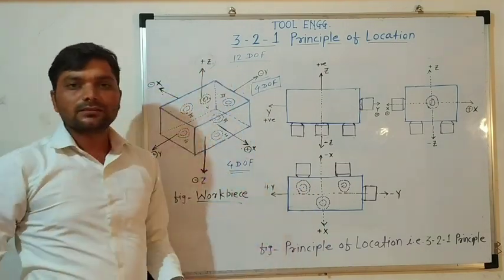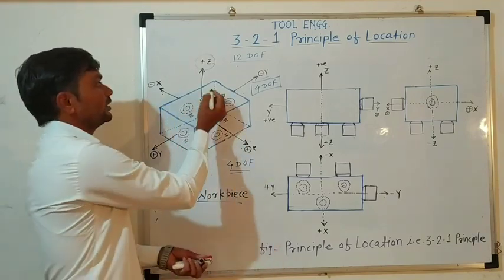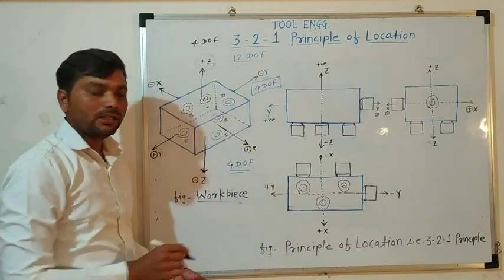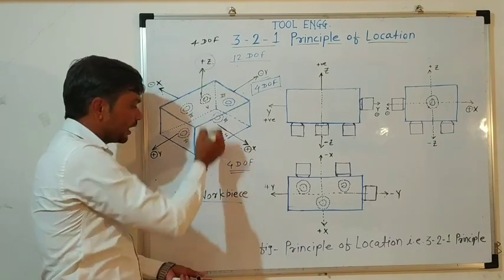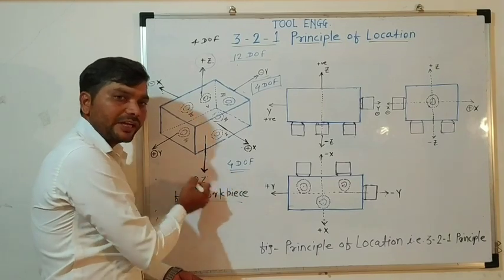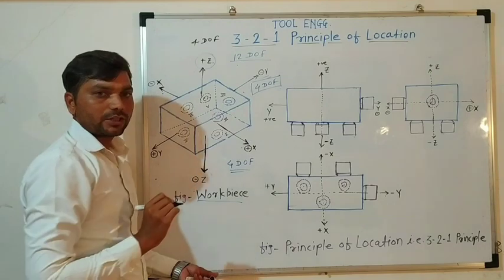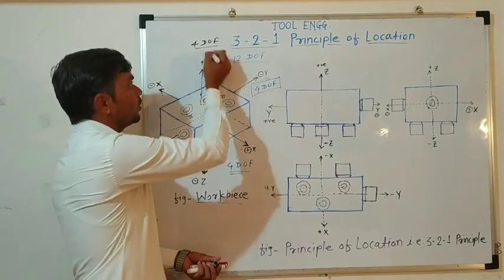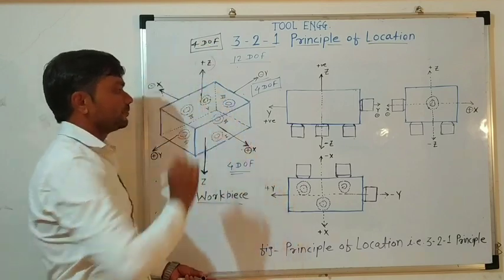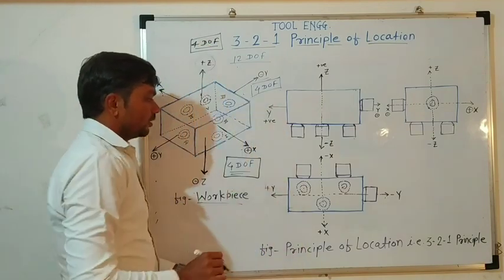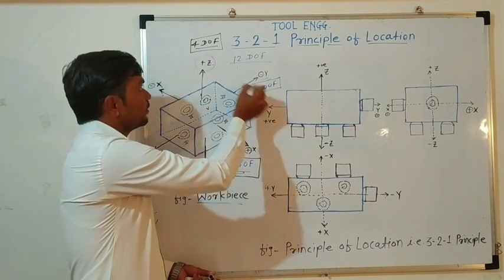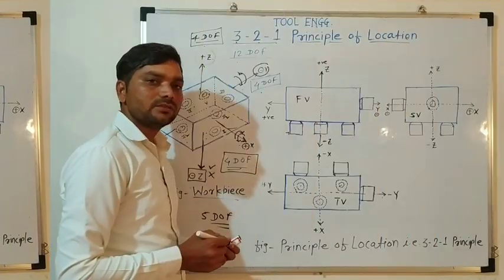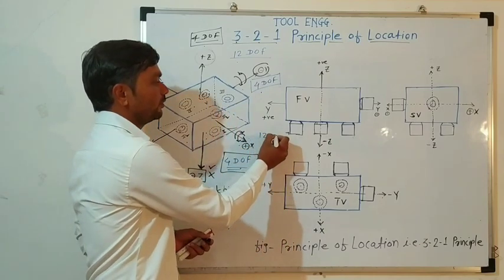If we consider the z-axis, then again for the z-axis we get 4 degrees of freedom — this object can move in 4 directions. Two are translatory: it can move in the positive z-direction as well as in the negative z-direction. Along this, it can rotate in clockwise and anticlockwise along the z-axis. So we get 4 degrees of freedom. Adding 4 plus 4 plus 4, we get a total of 12 degrees of freedom. This free body has 12 degrees of freedom.